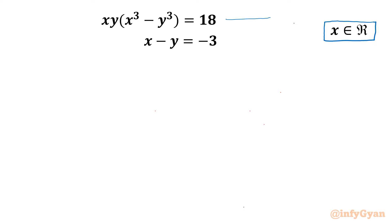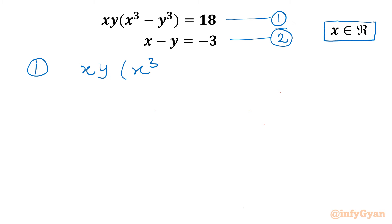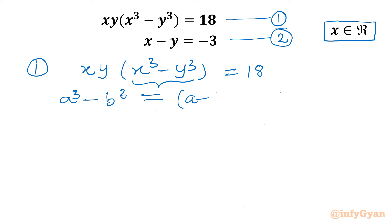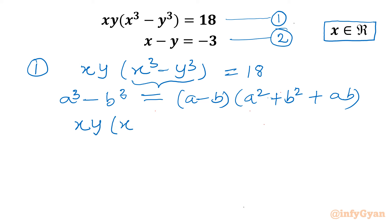Let's get started by considering equation 1 and 2. Equation 1 is xy times (x³ - y³) = 18. Now here we apply the a³ - b³ formula: a³ - b³ = (a - b)(a² + b² + ab). So we write equation 1 as xy(x - y)(x² + y² + xy) = 18.